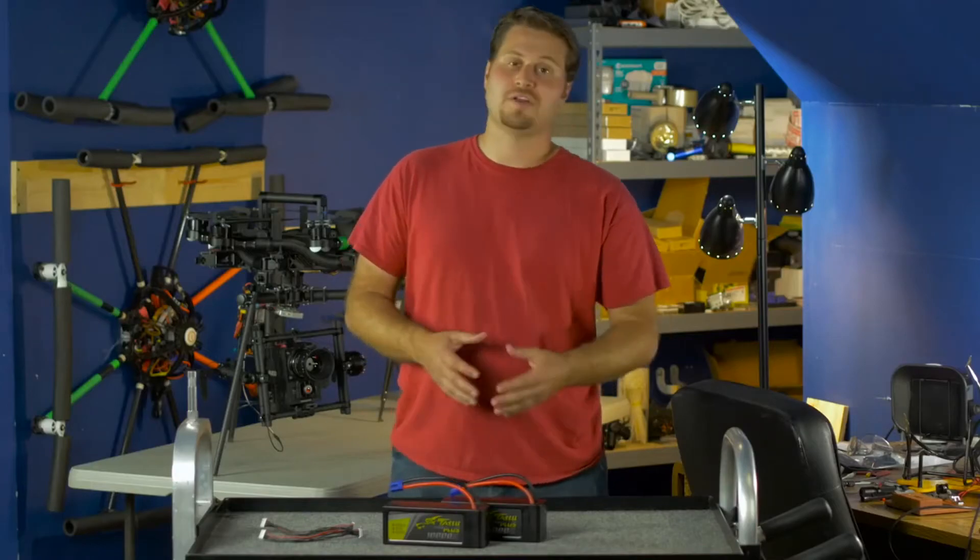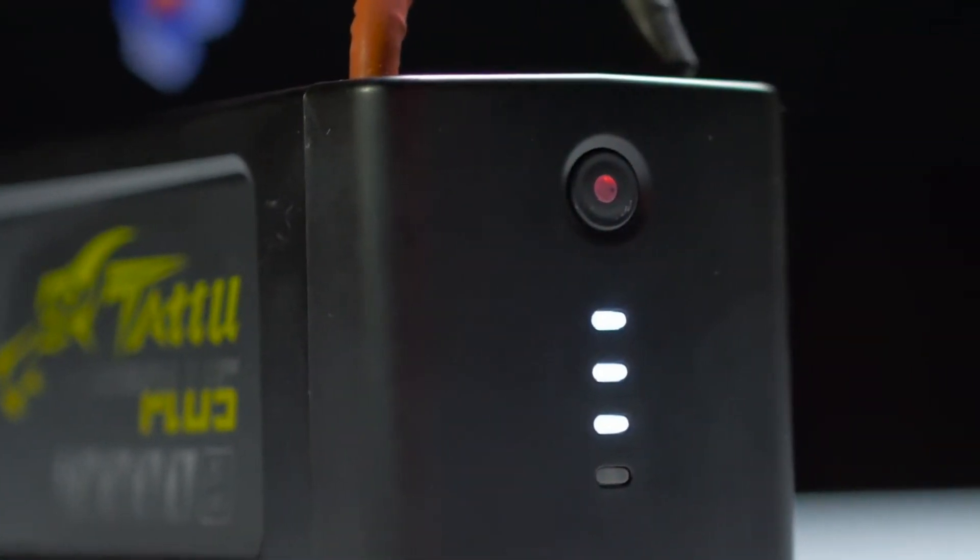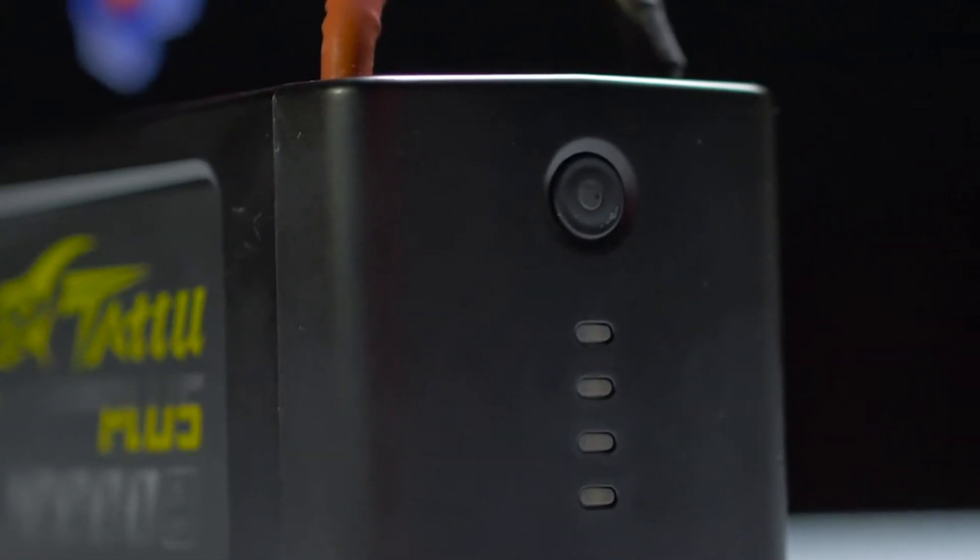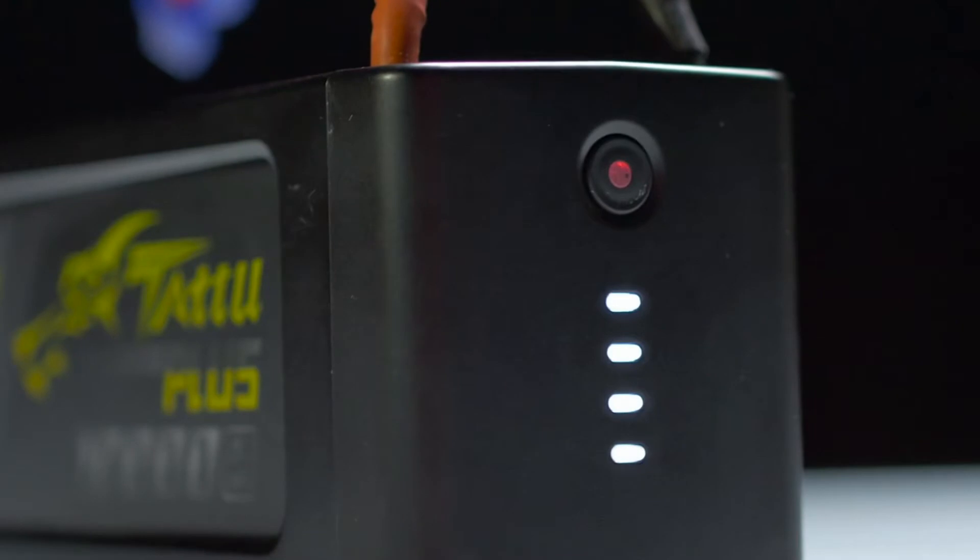Now let's cover the intelligent features of the Plus battery. The first thing is the battery charge status. You can press the button on the front of the battery and you will see indicator lights that let you know how full of a charge your battery has. These four LED lights are indicators of 25%. If you see four white LED lights, this is a full charge.